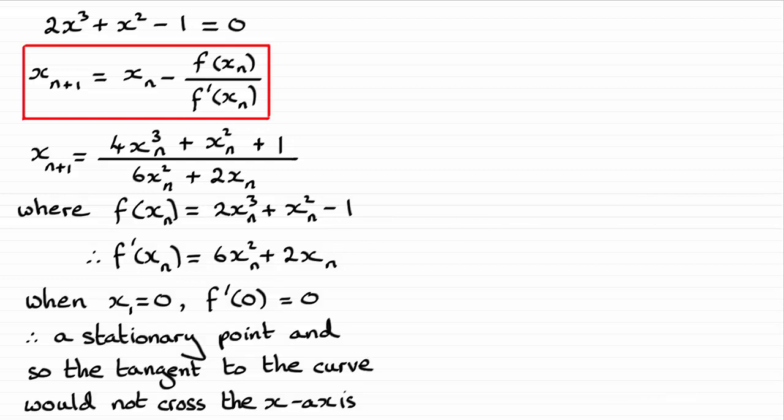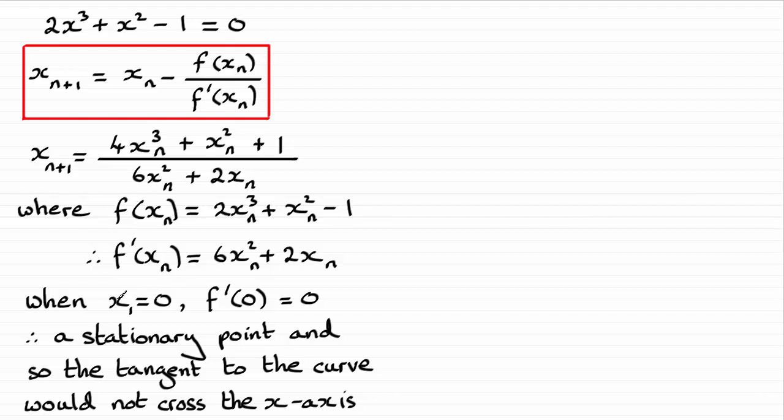So this would be my explanation. When x₁, our first approximation, equals 0, we would have that f dash 0 equals 0, a stationary point, and so the tangent to the curve would not cross the x-axis.